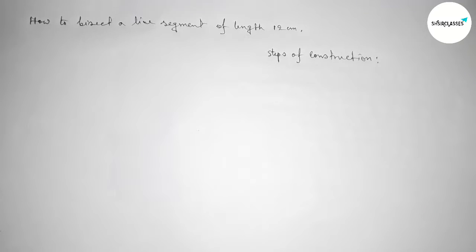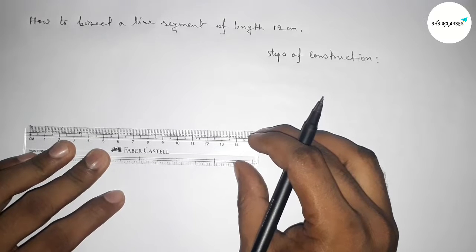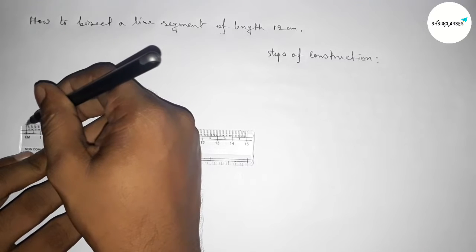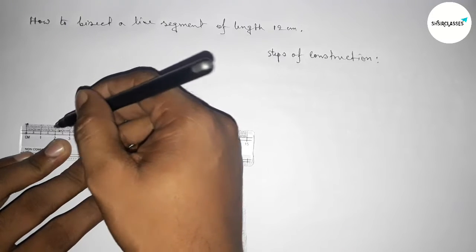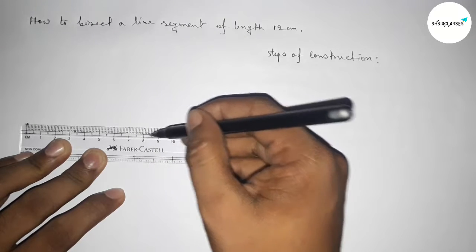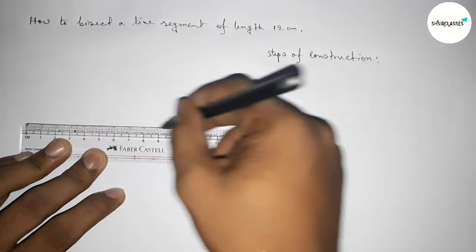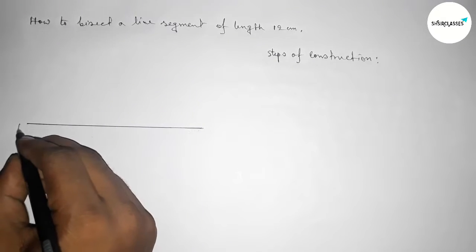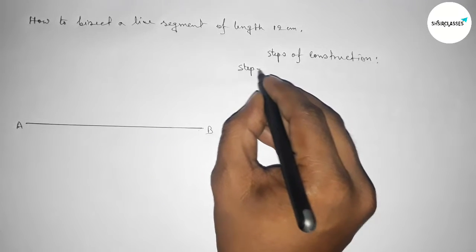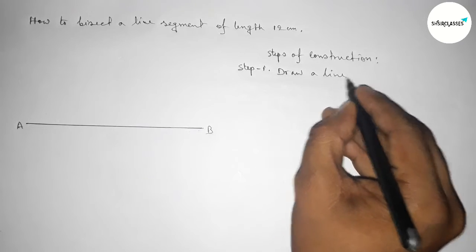Now first we have to draw a line of length 12 centimeters. This is starting at zero: one, two, three, four, five, six, seven, eight, nine, ten, eleven, twelve. This is a 12-centimeter line segment. Marking here point A and here point B.